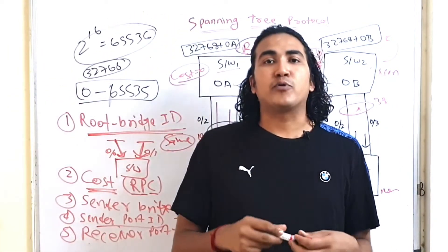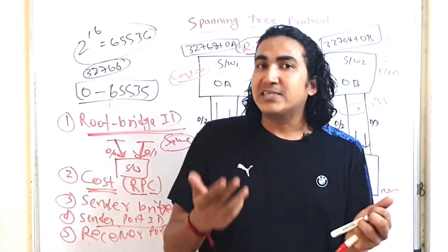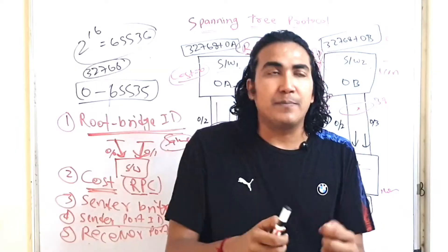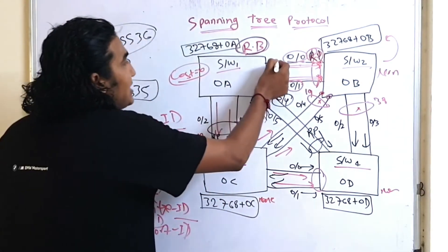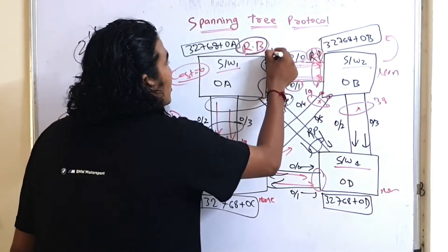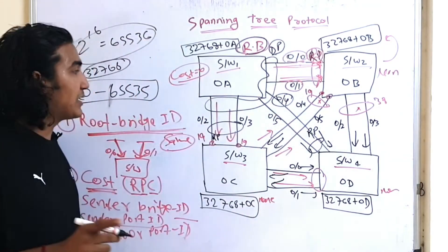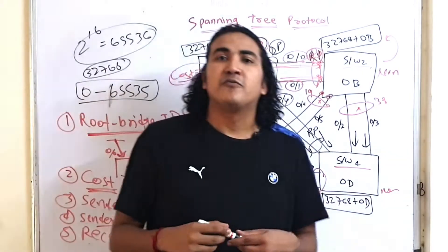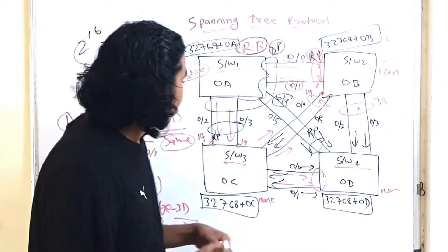After selecting the RP, you elect the designated ports. The designated port is the port sending the superior BPDU. Since the root bridge sends superior BPDUs, all ports of the root bridge become DPs. Then you need to find the remaining alternate ports and DPs on other segments.